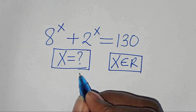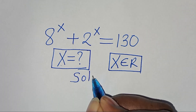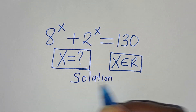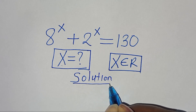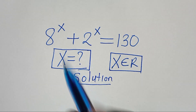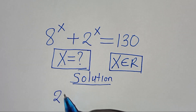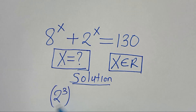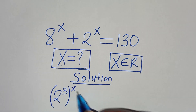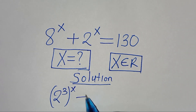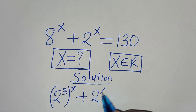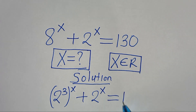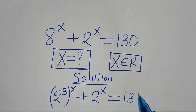Let's provide a solution from here. We can express 8 to the power of x as 2 to the power of 3 raised to the power of x, then plus 2 to the power of x, and this is equal to 130.